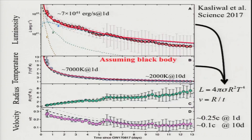This shows the bolometric luminosity and the temperature. Temperature is determined from the spectrum assuming a blackbody. Luminosity at about one day is about 10^42 erg per second, and the temperature is about 7,000 Kelvin. Assuming spherical ejection and blackbody radiation, we can calculate the radius of this electromagnetic counterpart. Dividing the radius by the time after the merger, we can get the velocity. It is found that the velocity is about 0.25 to 0.3 times the speed of light at one day, and then it decreases gradually.